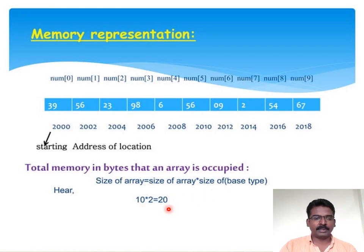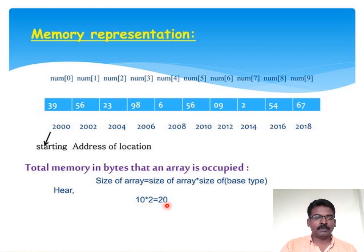The formula for total memory size is: total size of the array multiplied by the bytes occupied by a single element of that data type. For the array 'number', the size is 10 elements, and since the elements are integers each occupying two bytes, we multiply 10 by 2 to get the total memory size of the array.